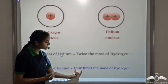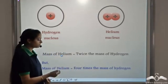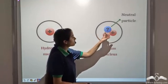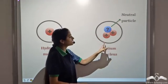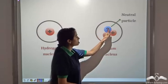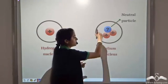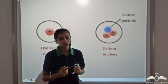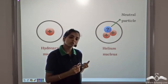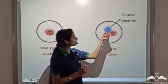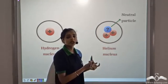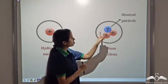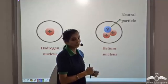So where was this extra mass coming from in the helium atom? Scientists concluded that there should be some extra particle present in the nucleus of the helium atom. This extra particle is giving the extra mass to the helium nucleus, and this particle should be neutral. Because an atom is electrically neutral — the number of electrons is equal to the number of protons — if this particle had some charge, it would make the atom unstable and not electrically neutral. Therefore, this extra particle should be neutral in nature.